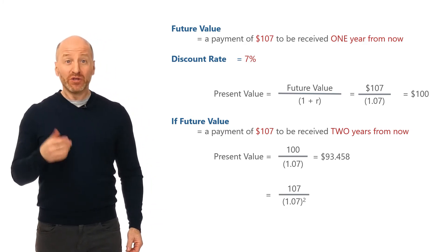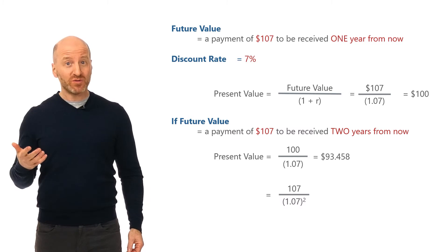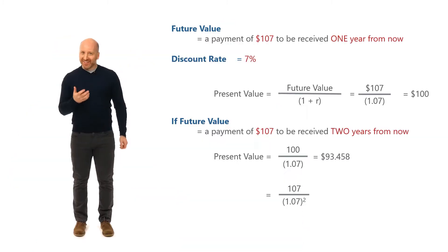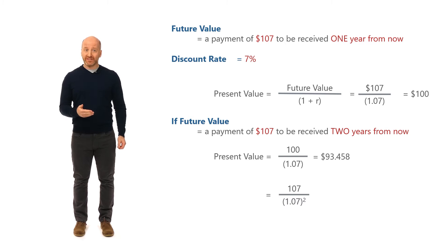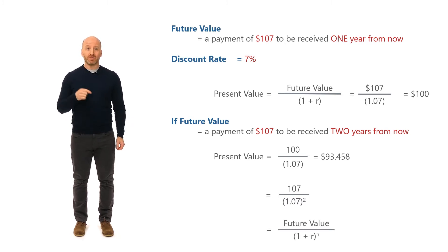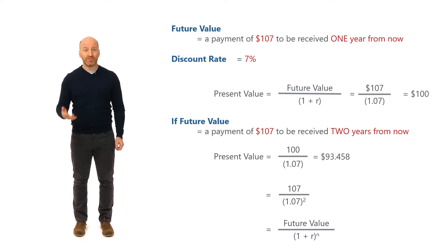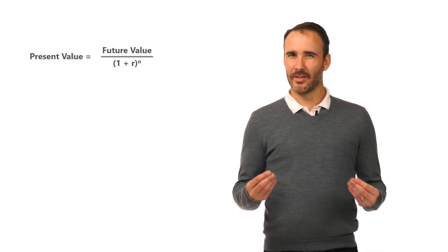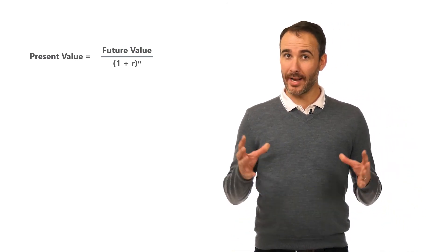Yes you can. And if you had to wait five years before receiving that future value, you could just discount it by 1.07 raised to the power of five. The classic formula for discounting is that the present value equals the future value divided by one plus r raised to the power n, where n is the number of years into the future.